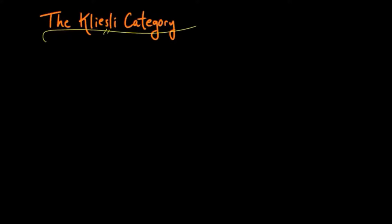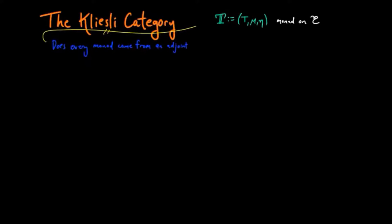The Kleisli category for a monad T on a category E gives us another way to produce an adjoint situation from a monad. Last time we looked at the question: does every monad come from an adjoint situation? And the answer is yes. The Eilenberg-Moore construction provided us a solution.